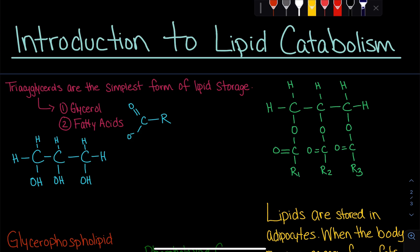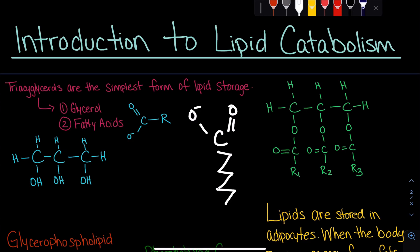Let's break this down further. First, we need to understand what a fatty acid is. A fatty acid always has a carboxyl group — that's why it's called an acid — and it has a long hydrocarbon chain. This long hydrocarbon chain is hydrophobic. Fatty acids can vary in how many carbons they have, how many saturated bonds they have, and whether they're saturated or unsaturated.